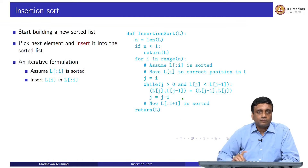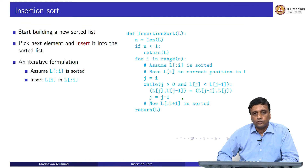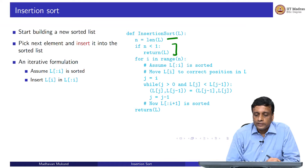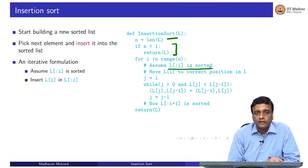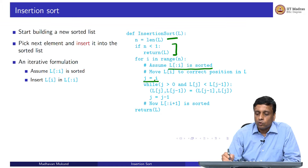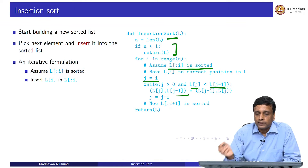Here is insertion sort. It is actually simpler to write than selection sort. We compute the list length; if the length is 0, we return. Otherwise, like selection sort, there is an invariant: at position i, we assume 0 to i minus 1 is already sorted. So we start with the i-th position and want to go backwards.